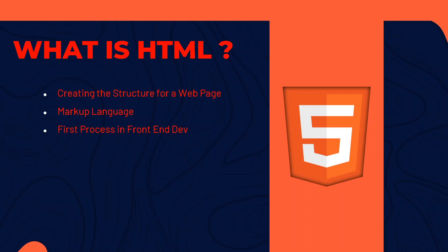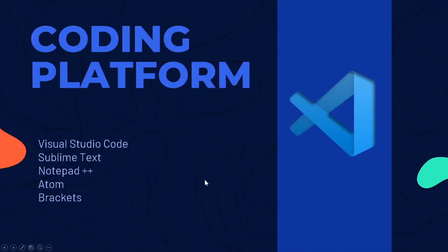HTML is used for structuring web pages with tags and elements — defining headings, paragraphs, and other content. It's used to navigate the internet, embed images and videos, improve client-side data storage and offline capabilities, interact with native APIs, and it's the first process in front-end development — the first layer in learning web development.